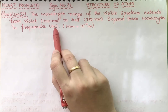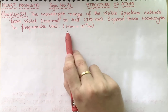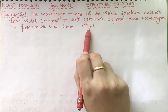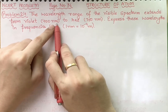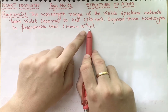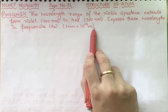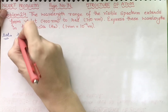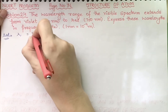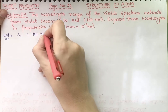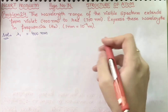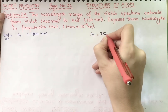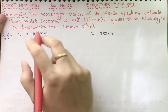The frequency should be in hertz. We know that one nanometer equals 10 raised to power minus 9 meter. We are given the wavelength in nanometers, and they have provided the conversion factor. The given values are: lambda 1 equal to 400 nanometers and lambda 2 equal to 750 nanometers.